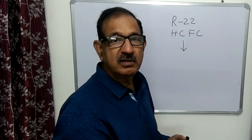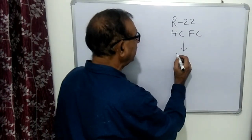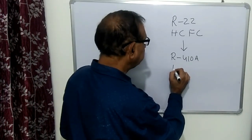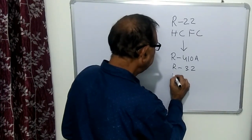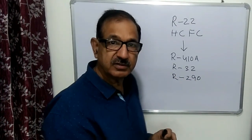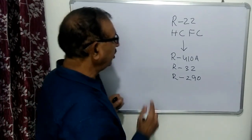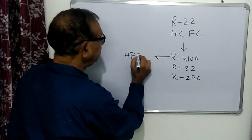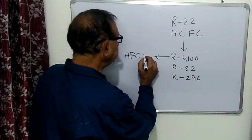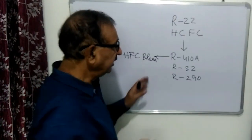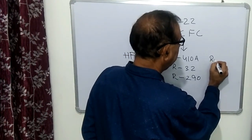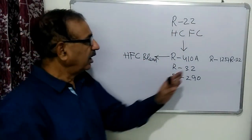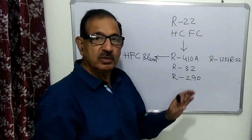Since we are not going to have R22 in the future, the alternates we have are R410A, R32, and R290 for air conditioners. R410A is an HFC — hydrofluorocarbon — and it is a blend. It is a mixture of R125 and R32.